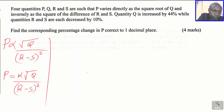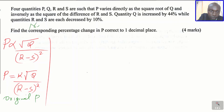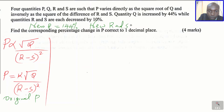This is the original P. Now, Q is increasing by 44%, so the new Q will be 144%, that is 100% plus 44%. R and S are decreased by 10%, so new R and S will be 100% minus 10%, which is 90%. Now having obtained those, let us input them into the equation and get the new value for P.